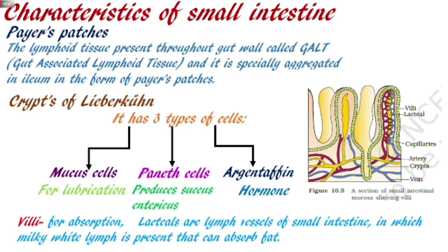Inside the villi, there are capillaries and lacteals. The nutrients absorbed pass into capillaries and lacteals. When we talk about capillaries, there are two types: arteries and veins. Lacteals are lymph vessels. In lacteals, lymph flows — lymph is white in color. Fats are absorbed through the lacteals.